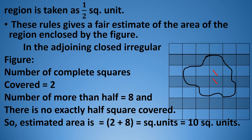Two complete squares are there, so we take two square units. For more than half square covered, we count it as one square unit — there are eight such squares, so they are eight square units. Estimated area is 2 plus 8, that is 10 square units. This is the way we can find out the area of irregular figures, or regular figures also, without using a formula.